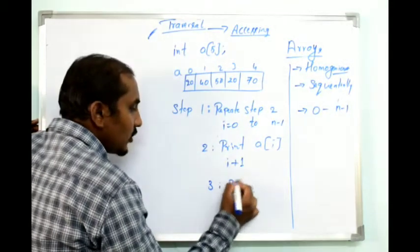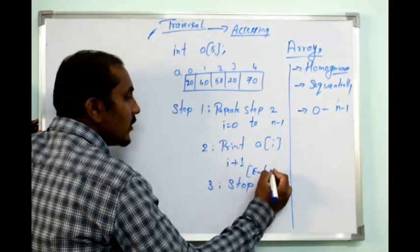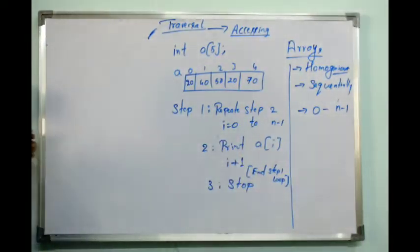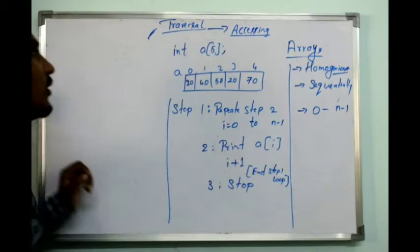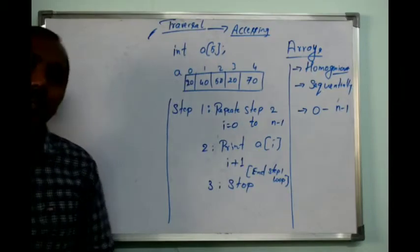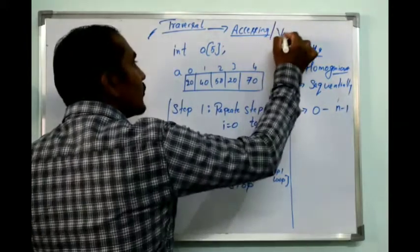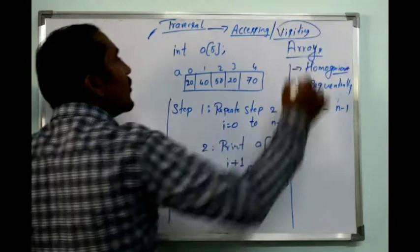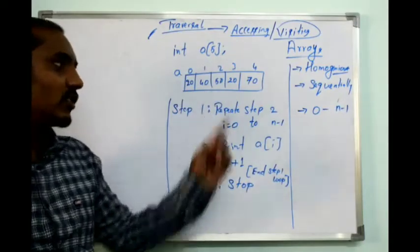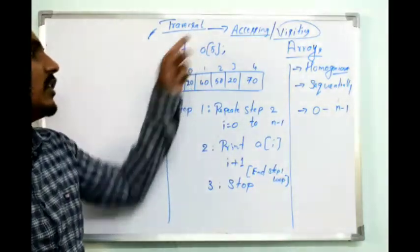At last, you can write the statement: end step 1 loop, then stop. This is the algorithm for accessing elements from the array, which is traversal. Traversal means accessing or visiting the elements of the data structure at least once — all elements should be accessed at least once.